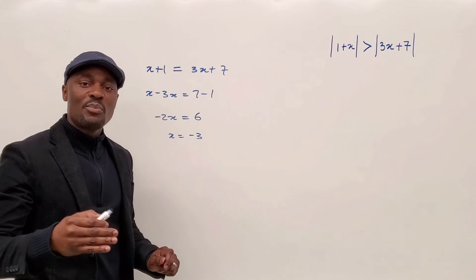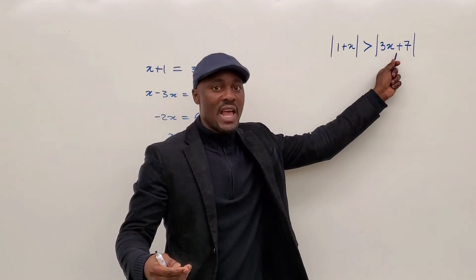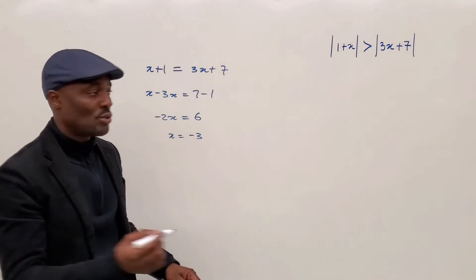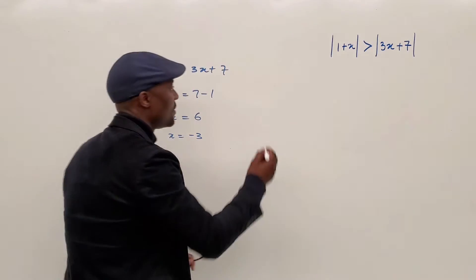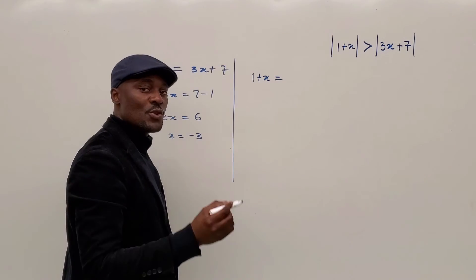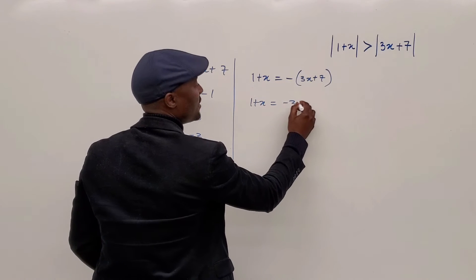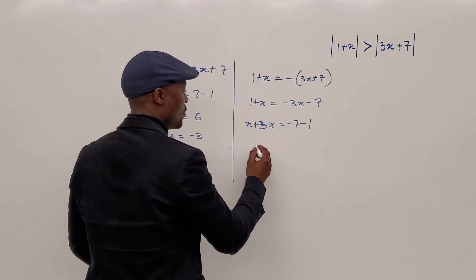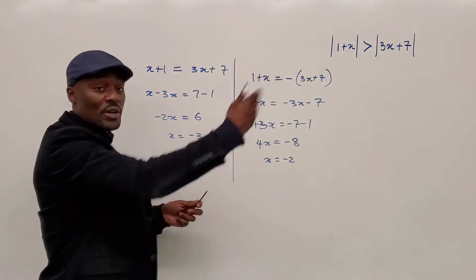Now the second point: remember there are four options — both positive (just taken), or one positive and one negative, or one negative and one positive. When you try those four, you'll end up getting the same set of two answers. The next assumption is that the second term is negative, which will give a negative answer. So you write 1 plus x equal to negative 3x minus 7. When you solve this, you get x plus 3x equals negative 7 minus 1. You have 4x equals negative 8, and x equals negative 2. So there are two critical points: negative 3 and negative 2.